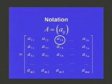You'll notice that this is an M by N matrix because the last entry is A sub MN. And that means there are M rows and N columns.